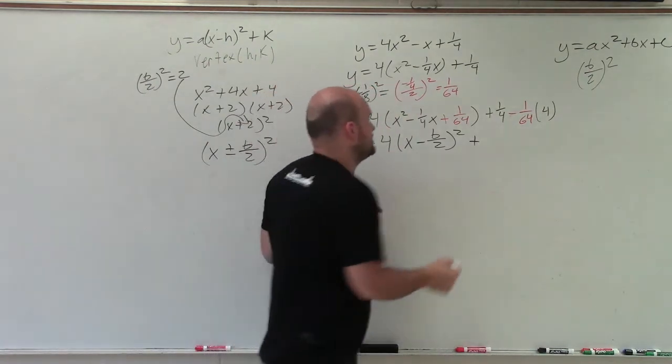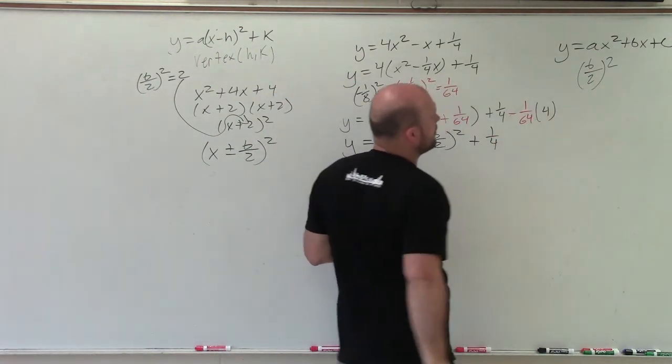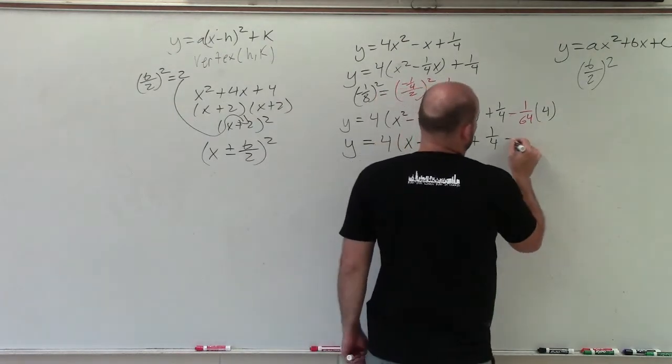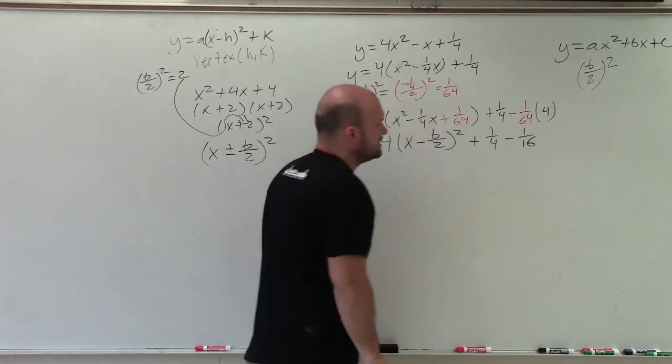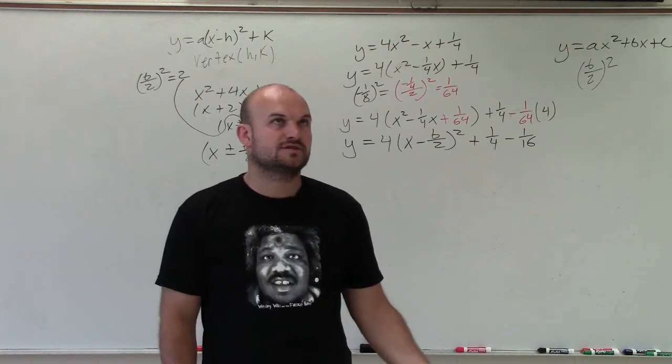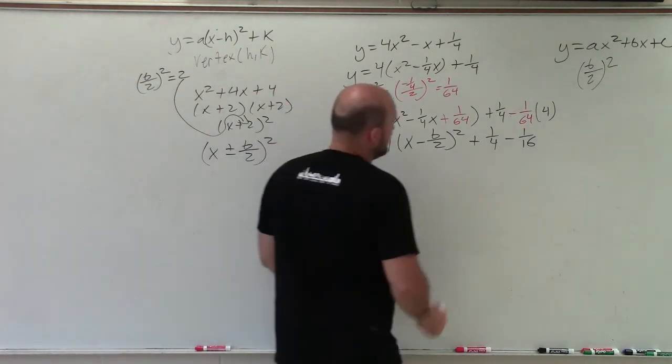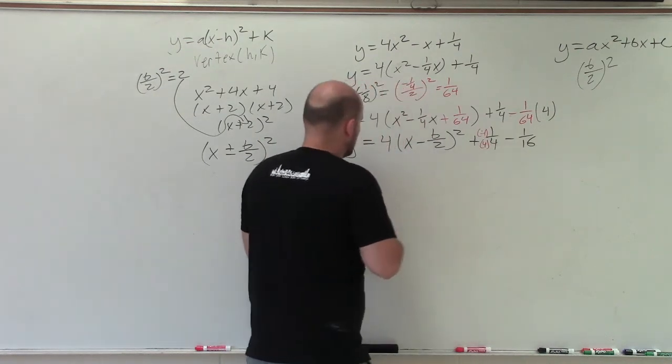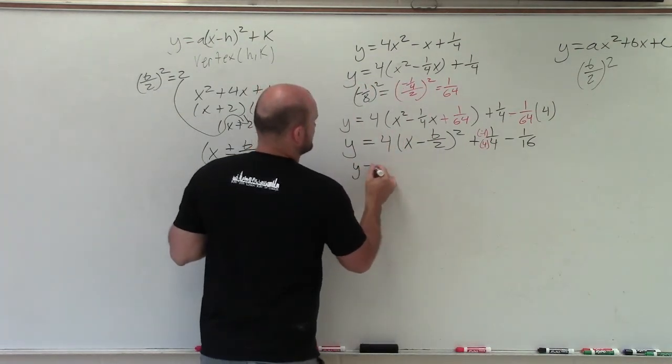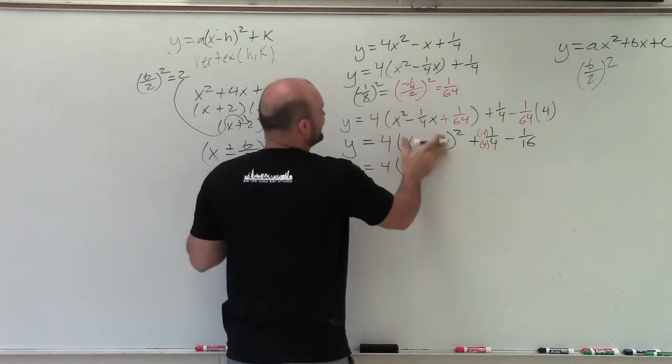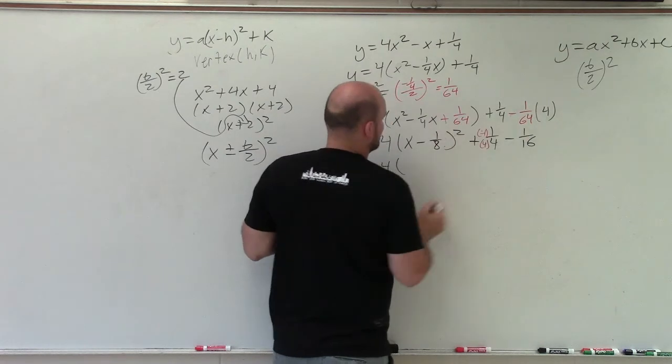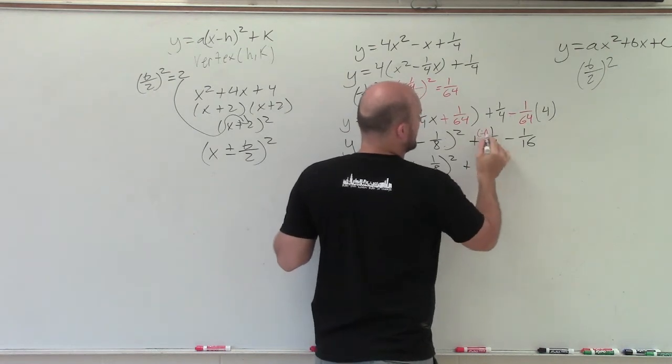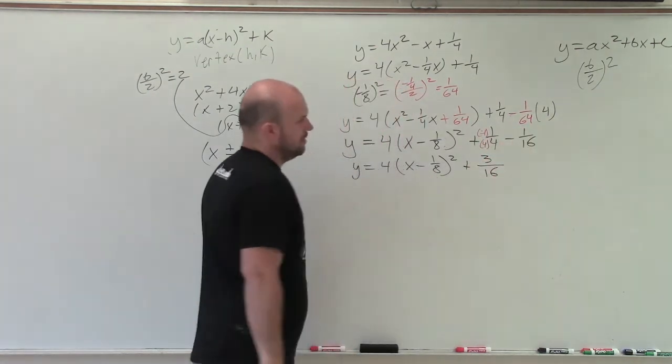Plus, now here comes some fraction work. I have 1 fourth, 4 divided by 64. Let's factor out a 4 which would be minus 1 over 16. Now I need to combine these, so I need to get common denominators. I'll multiply by 4 over 4. Therefore, now I can rewrite this as y equals 4 times x minus 1 eighth squared plus, 4 minus 1 is going to be 3 over 16.